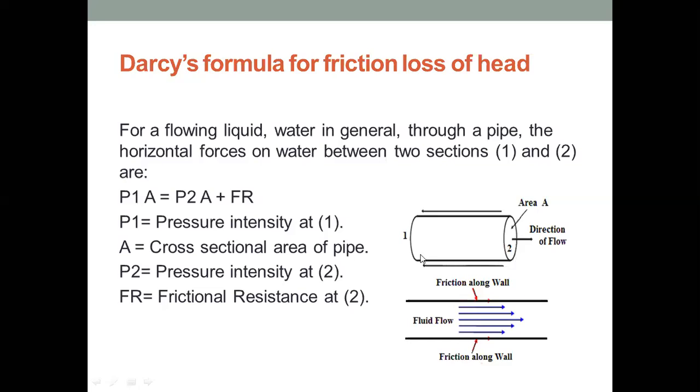Pressure at inlet is P1. The cross-section area of the pipe is capital A, and the pressure at outlet is P2.